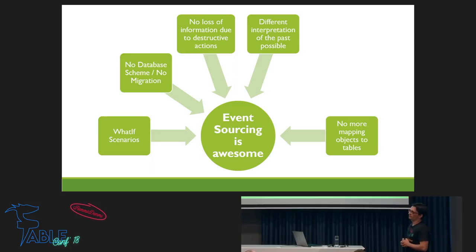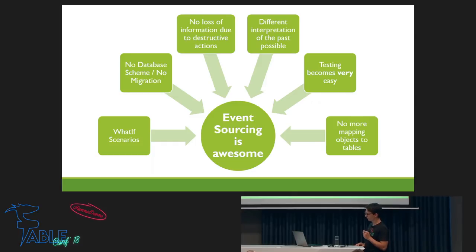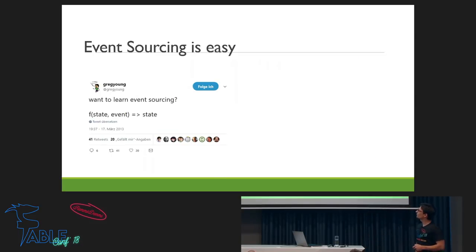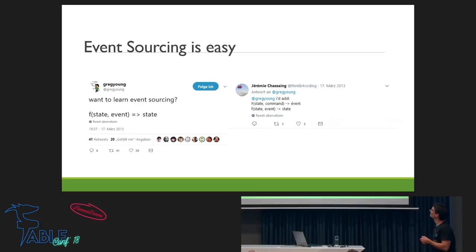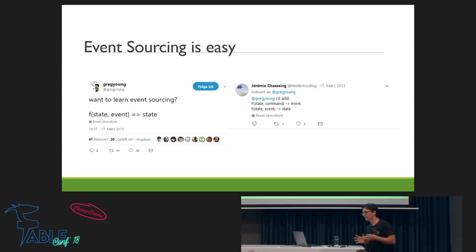Testing becomes very easy. Greg Young, the inventor of CQRS and a big proponent of event sourcing, said: 'Event sourcing is easy — it's just a function from state and event to state.' Jeremy also added that we have a function from state to command to event. But basically they're right — that's the basic notion. Of course, we need to implement it, but that's it.